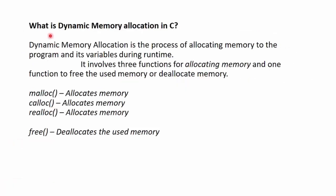Next question: what is dynamic memory allocation in C? Dynamic memory allocation is the process of allocating memory to the program and its variables during runtime. It involves three functions for allocating memory and one function to free or deallocate the used memory. The three functions used to allocate memory are malloc, calloc, and realloc. The function used to deallocate used memory is free.